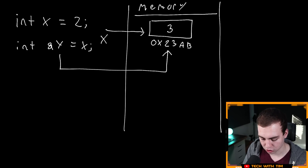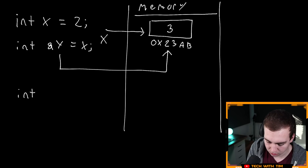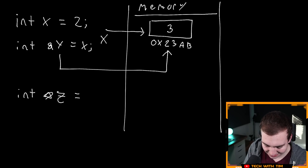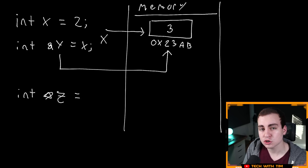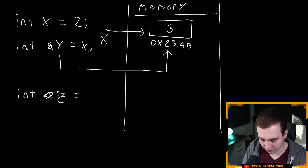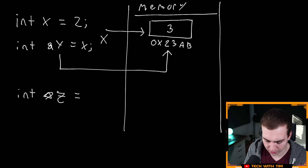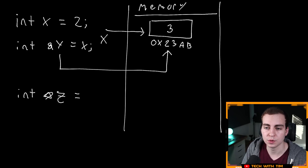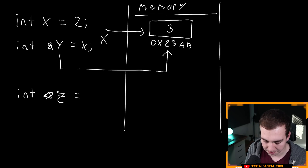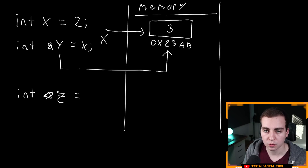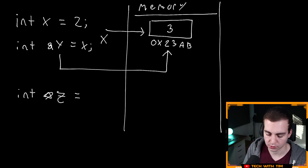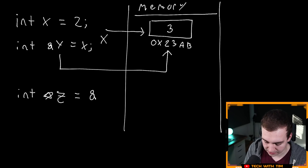Now, this is different from a pointer. When we make a pointer, what we can do is say something like int *zed, and then this needs to be equal to the memory address location of whatever we want this pointer to hold. The asterisk is the symbol for pointer. So whenever you initialize a pointer, you use an ampersand. What I'm saying is I'm making a pointer called zed, and I want this to store a memory address location. So what I need to do is use the ampersand to access the memory address location of wherever this pointer wants to hold — and in this case, I will say X.